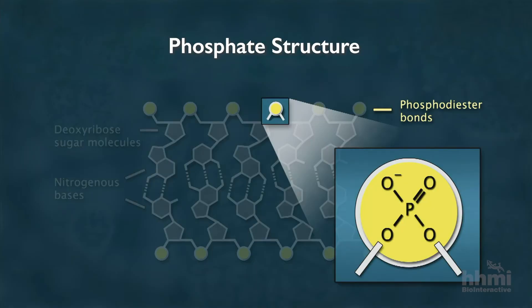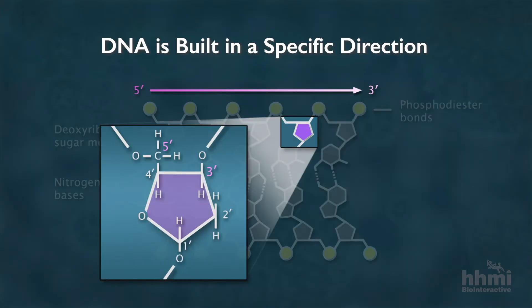Here is the chemical structure of a phosphate group, which has a negative charge. This is the chemical structure of a deoxyribose sugar. The carbon atoms at the five prime and three prime positions of the deoxyribose sugar form bonds with the phosphate groups.